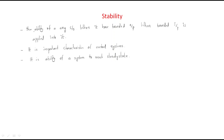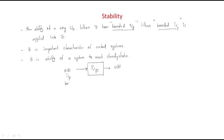The definition of stability is the ability of any system to have a bounded output when a bounded input is applied to it. For example, we have a system with some transfer function — every system is defined with some transfer function. We give some input and we get some output.